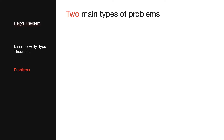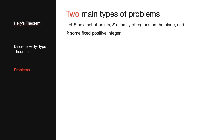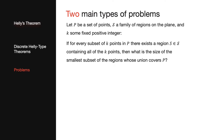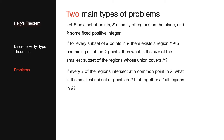A similar approach works in the dual setting too. There are two main types of problems that we will be covering. Given a set of points, a family of regions in the plane, and some fixed positive integer k: the first type asks if for every subset of k points there exists a region covering all k points, then what is the size of the smallest subset of regions whose union completely covers all points? The second type asks if every k of the regions intersect at a common point in our point set, what is the smallest subset of points that hits all of the regions?